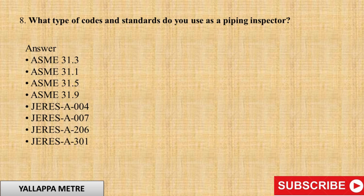Question 7: What are the main things that you will check before bolt torquing? Answer: ASME B31.3, ASME B31.1, ASME B31.5, ASME B31.9, JIRS A004, JIRS A007, JIRS A206, JIRS A301.